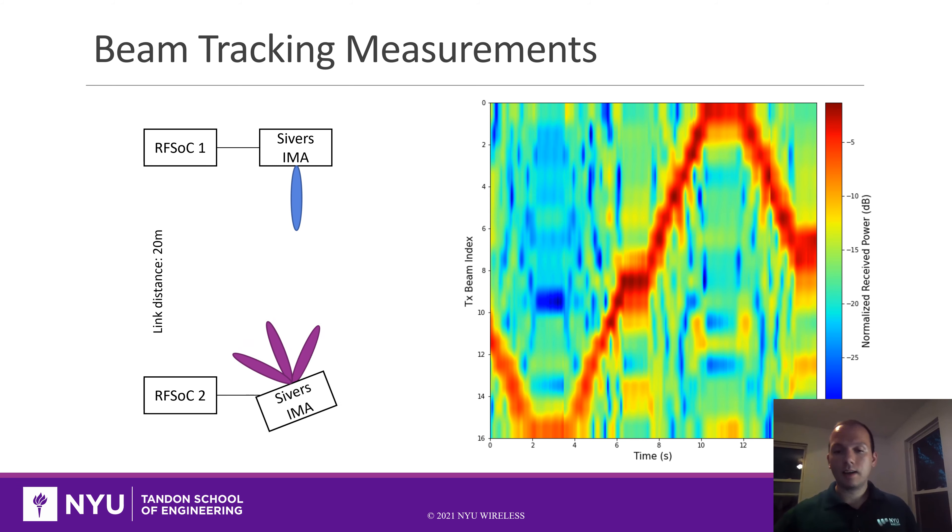You can see the pattern of the array moving from minus 45, moving from 0 to minus 45 degrees, again to 0, then to 45 degrees and then back to 0. Someone can use the testbed and this kind of measurements to create good algorithms or use machine learning for beam tracking.